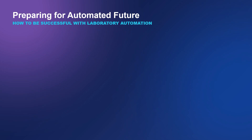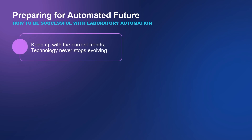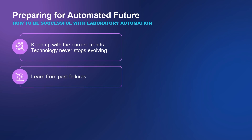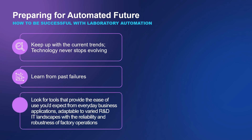How do we get ourselves ready for a future using laboratory automation? Technology continues to evolve at unprecedented rates. It would be naive to believe this will not impact the field of laboratory automation, even if historically the field has lagged behind cutting-edge advancements. There have been plenty of bad automation projects, but also good ones — and it's past failures that provide the opportunity to learn from mistakes and use new technologies to find a better way. Seek the level of ease of use from your automation tools that you expect from tools like Microsoft Outlook, Google Drive, or Confluence — tools that are adaptable to work within a varied R&D environment while providing the reliability and robustness you expect from safe factory operations.